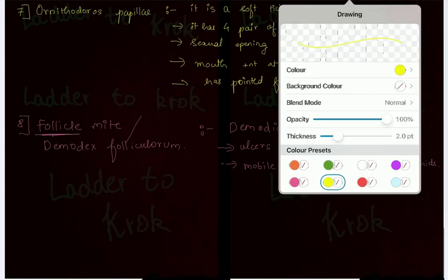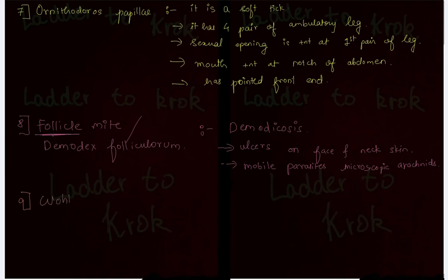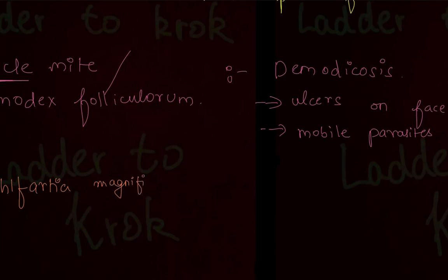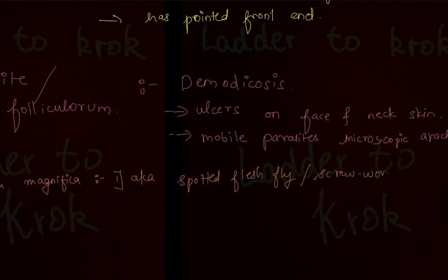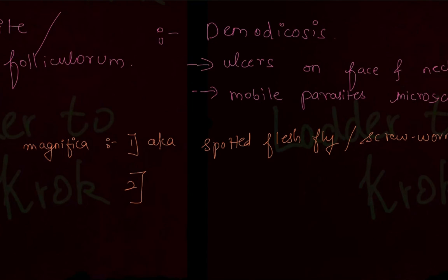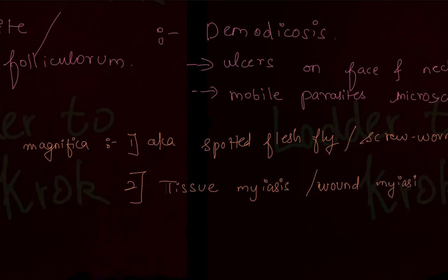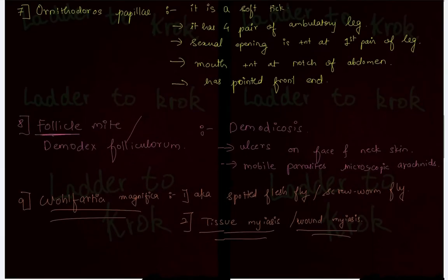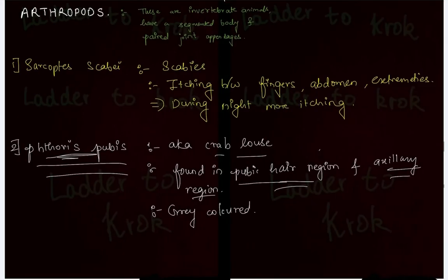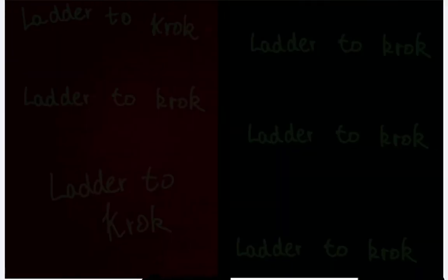The last organism is Wohlfahrtia magnifica, a very important organism that comes in the CROC exam many times. It is also known as the spotted flesh fly and the screw worm fly — remember both names. In the question, the keywords that indicate the answer is Wohlfahrtia magnifica are 'tissue myiasis' or 'wound myiasis.' If you see either of those terms, the answer is Wohlfahrtia magnifica. That covers all nine arthropods, which is enough for medical biology and the CROC exam.